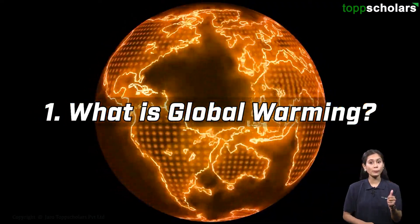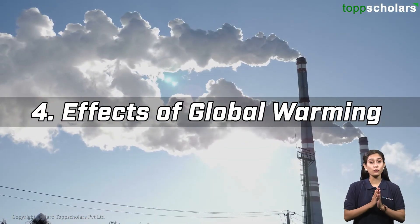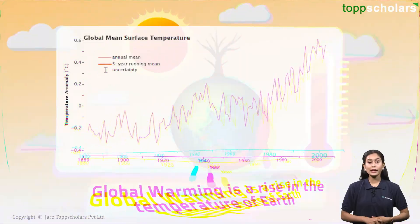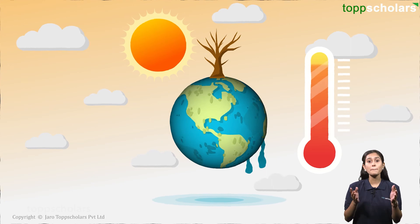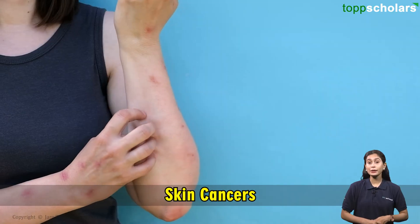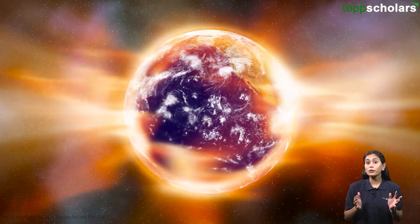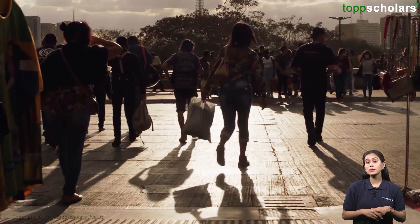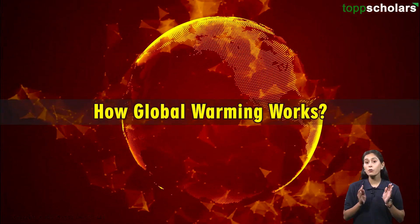In this video, you will get to know what is global warming, the greenhouse effect, causes of global warming, and effects of global warming. In simple words, global warming is a rise in temperature. This is happening due to many factors. You must have heard of news like the melting of glaciers, the increase in diseases like skin cancers, etc. These are all consequences of global warming. It is so harmful that the entire human race can end. Therefore, it is very important to understand how global warming works.